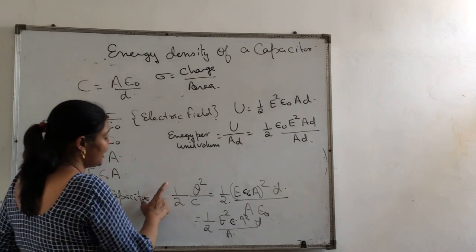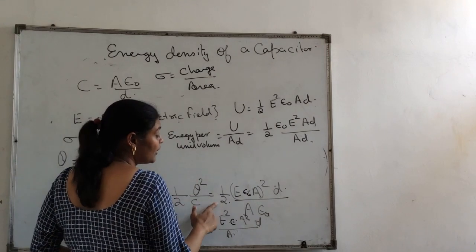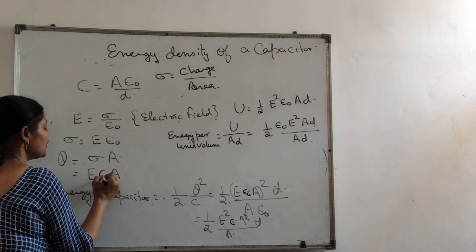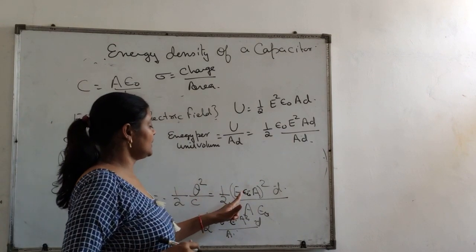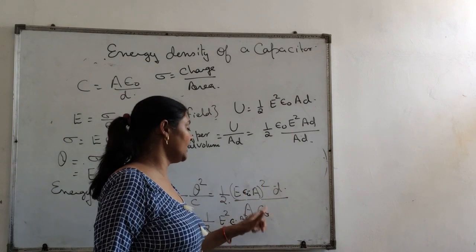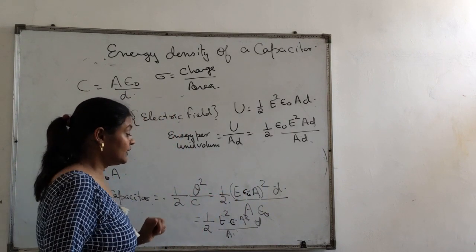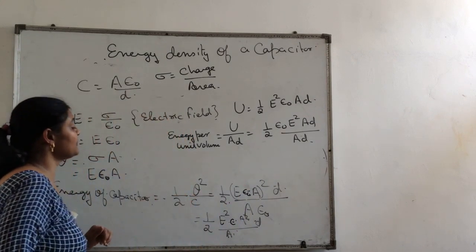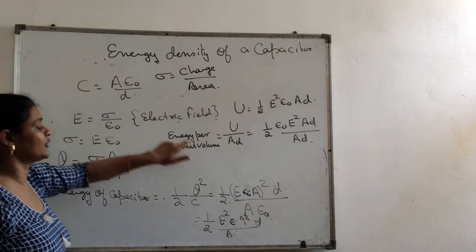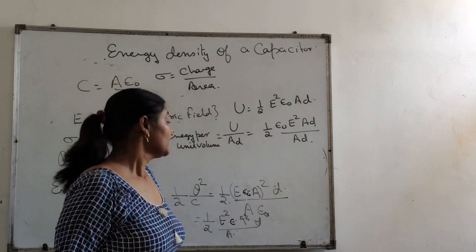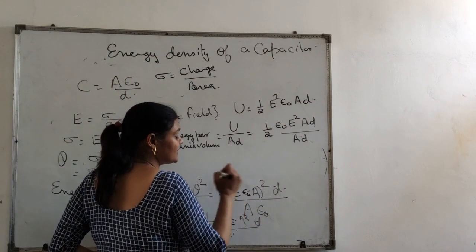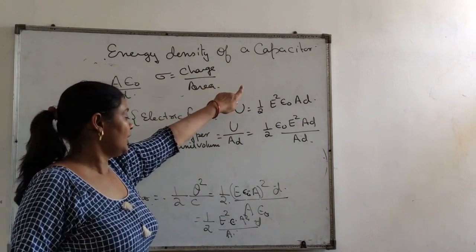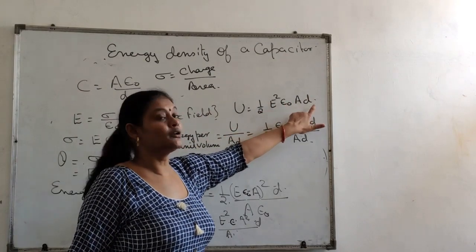So it will be Q is equal to sigma into A, which is E into epsilon naught into A. So energy of the capacitor is half Q square upon C. So half, if you substitute Q value, E epsilon naught into A whole square upon C. When I substitute C value as A epsilon naught upon D and cancel terms, one A and one epsilon naught will cancel.